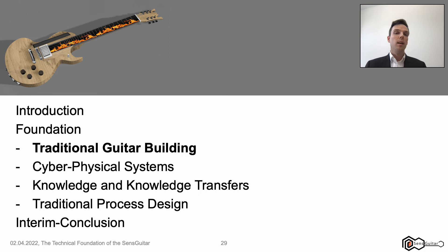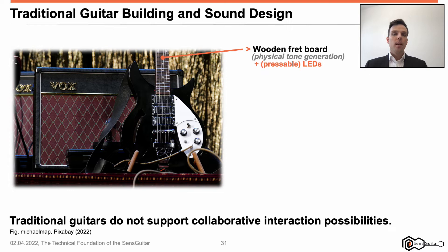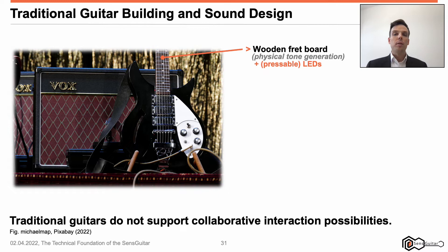Which kind of technical basis needs to be considered by setting up this new kind of guitar? Let's come to the foundation of guitar building. How do traditional electric guitars look like and how is sound created? Typically, there is a wooden fretboard which is used for physical tone generation. By fingertips, the string length is shortened so that the guitarist can modify the tone frequency. By string attacks, the amplitude is modified.